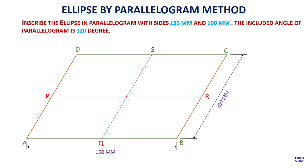Now you are going to divide your DP line into some equal divisions. DP is 50 mm because P is the midpoint of AD and AD is 100 mm as per the question. We are going to divide the PD line into some equal divisions — you can take any number of divisions but you should start with at least three equal divisions.